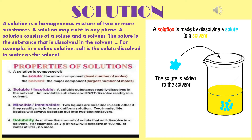Of these two components of a solution — solvent and solute — which one is termed as solvent and which one as solute? If the components of the solution exist in different physical states, then the solvent is the component which exists in the same state as the final solution. In case the components are in the same state, the component present in larger amount is called the solvent, and the component dissolved in lesser quantity is called the solute.